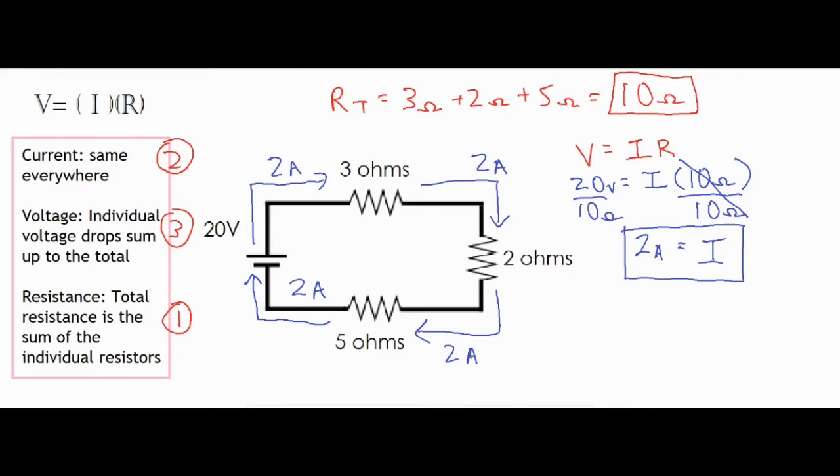So we have 2 amps flowing through any one of the resistors and also through the power source. Now finally we know that a portion of this 20 volts is going to be dropped throughout each of the resistors. And how do we do that? We use Ohm's law again, which is V equals I times R.